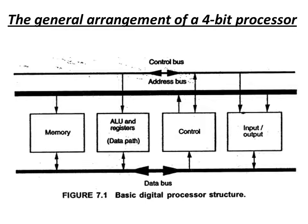Next we will look at the general arrangement of a four-bit processor. Here we have four blocks: the memory block, the ALU block, the control block, and the input/output block. We also have three buses: the control bus, the address bus, and the data bus. We are mainly concentrating on the data path — how data moves into the registers, into the ALU, and back to the memory, control, and I/O blocks.